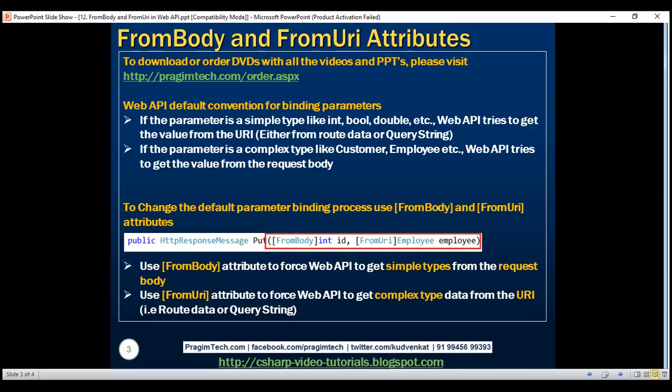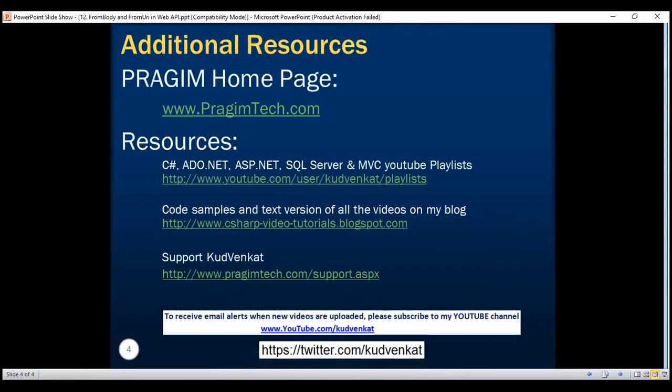So what is the use of FromBody and FromURI attributes? We use these attributes to tell Web API where to look in the request for parameter values. Thank you for listening and have a great day.